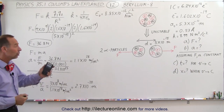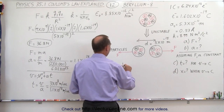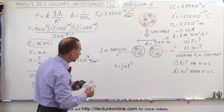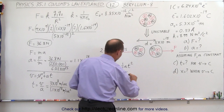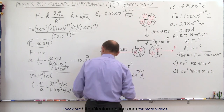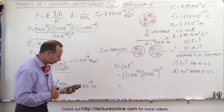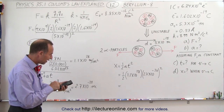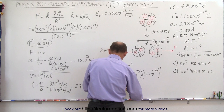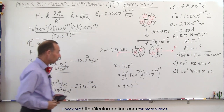Finally, how far will the alpha particles travel by the time they've reached roughly the speed of light? We use x equals one half times acceleration times time squared, since the initial velocity and initial position are both zero. Plugging in: one half times 1.1 times 10 to the 28 meters per second squared times (2.7 times 10 to the minus 20 seconds) squared. Squaring the time, dividing by 2, and multiplying by 1.1 times 10 to the 28 gives a distance of about 4 times 10 to the minus 12 meters.